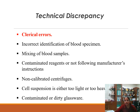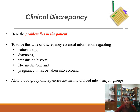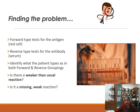Technical discrepancies include clerical errors, incorrect specimen identification, wrong blood in wrong tube, mixing of blood samples, contaminated or expired antisera, not following manufacturer's instructions, non-calibrated centrifuges, and incorrect cell suspension. Clinical discrepancies relate to the patient — a complete history including age, diagnosis, transfusion history, drug history, and pregnancy history must be taken. Forward typing tests for antigen; reverse typing tests for antibody.